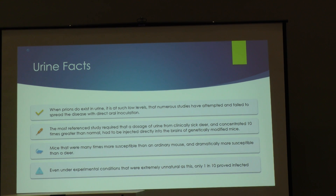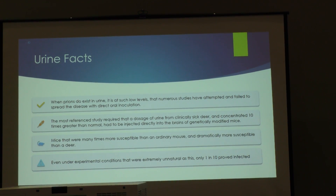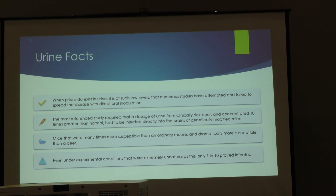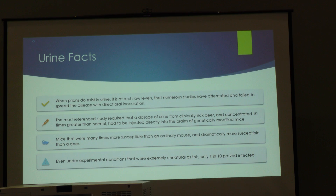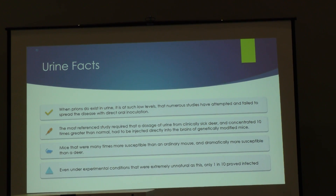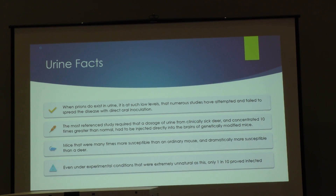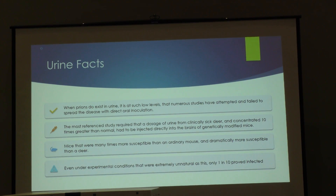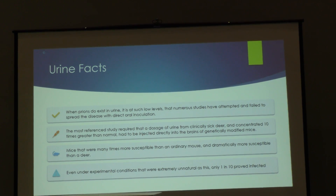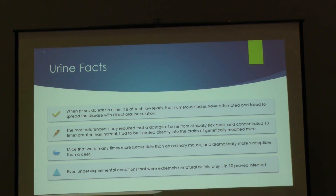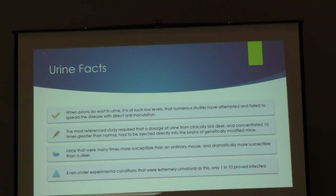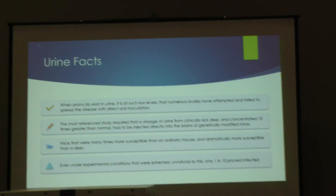If you give these mice any tissue from a positive deer, they're prone to get sick, especially when injected in the brain. One of ten mice in that study became sick with CWD. That is the animal model study with the strongest evidence that there are infectious CWD prions in urine. However, I would argue that those inoculation conditions do not reflect anything remotely possible in a natural setting.